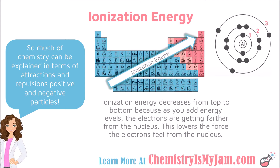Ionization energy decreases from top to bottom on the periodic table because each time you go down a row, you are adding an energy level. That causes the electrons to be farther away from the positive charge in the center, making them easier to remove. So electrons farther away from the nucleus have a lower ionization energy — that explains why going down a row lowers the ionization energy.